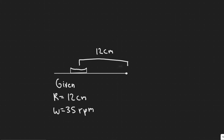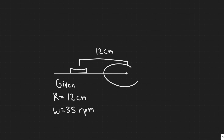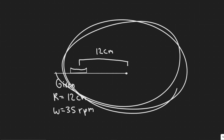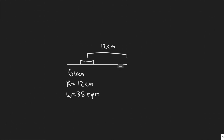The first thing you want to do for this problem is draw what's going on. We have this coin placed 12 centimeters from the radius of a turntable. You can imagine this is the turntable, and it's going to spin like this. We know that at 35 rpm — when the angular velocity of this turntable is 35 rpm — the coin is going to slide off.